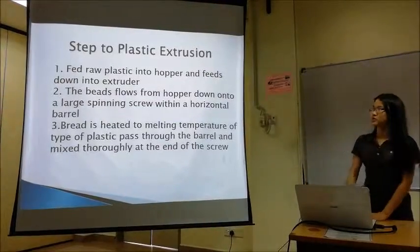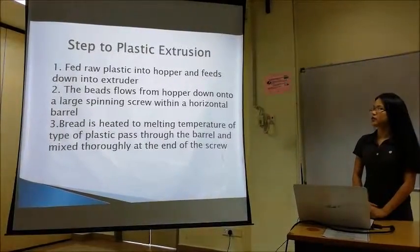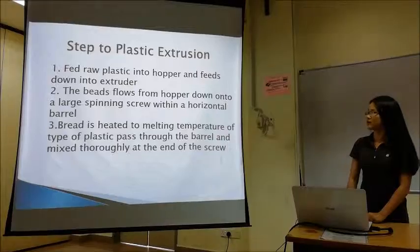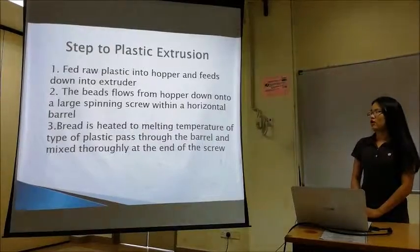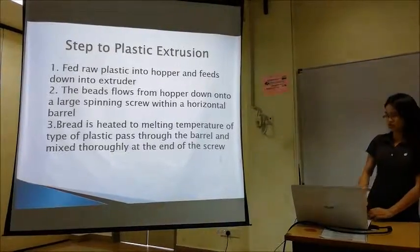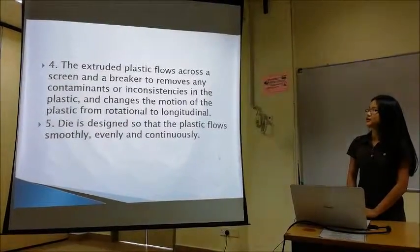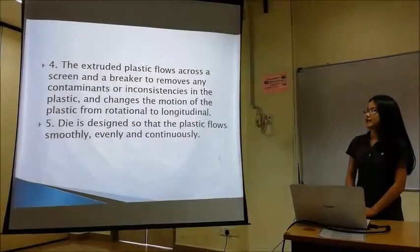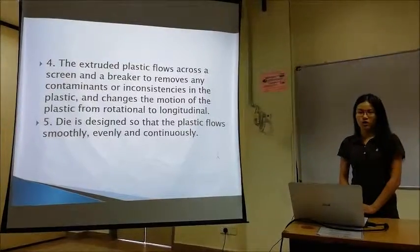The steps for plastic extrusion: First, plastic feed is fed into the hopper and then fed down into the extruder. The pellets flow from the hopper down onto a large rotating screw within a horizontal barrel. The plastic is then heated to the melting temperature of the type of plastic used and passed through the barrel and mixed thoroughly at the end of the screw. Step 4 is the extruded plastic flowing across a screen and a breaker plate. The screen is used to remove any contaminants or inconsistencies in the plastic, and the breaker plate is used to change the motion of the plastic from rotational to longitudinal.